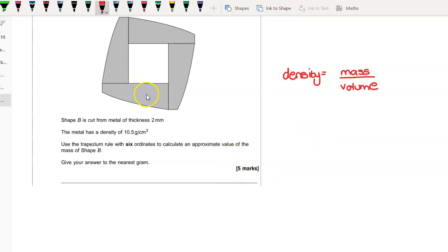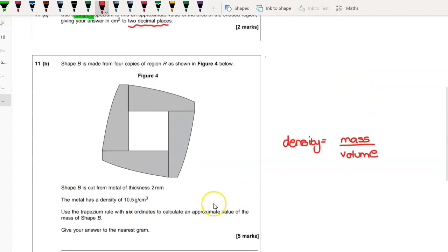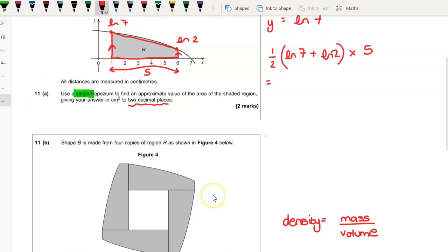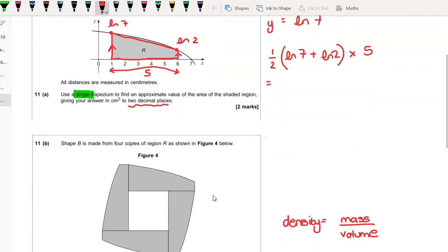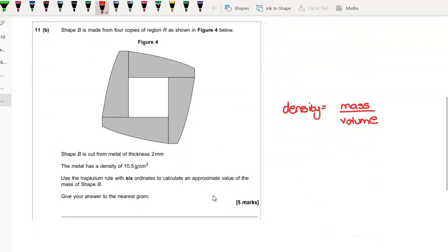So first of all we need to work out the volume of this shape. This is the cross sectional area of it. That's cut from metal thickness of two millimeters, so if you imagine it's going back two millimeters all the way around like that.